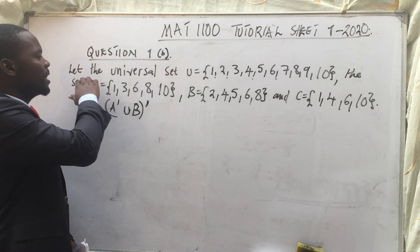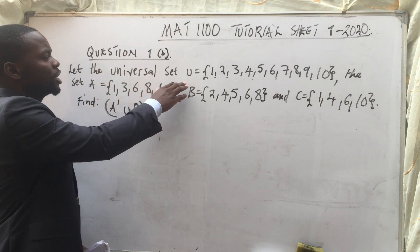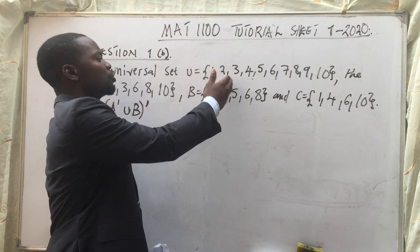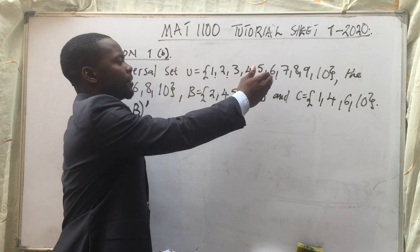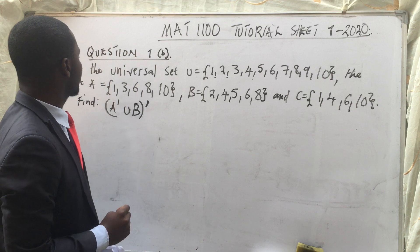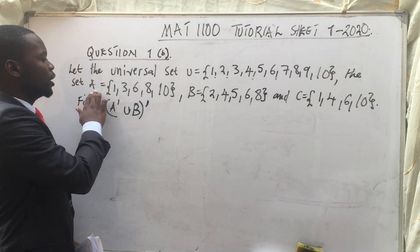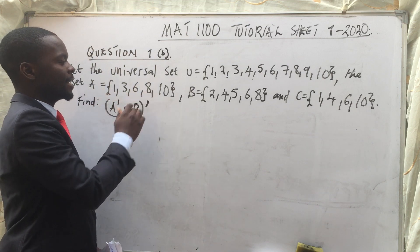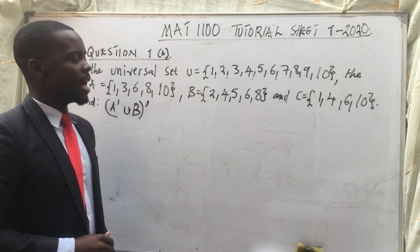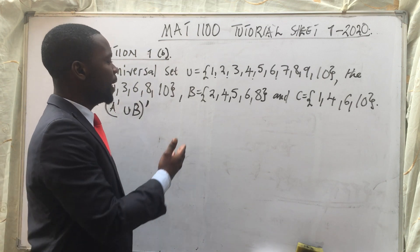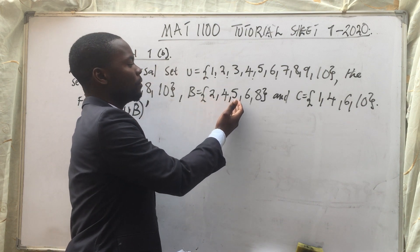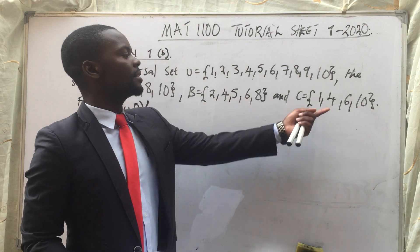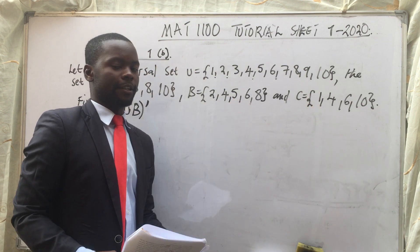The question reads: let the universal set U = {1, 2, 3, 4, 5, 6, up to 10}. The set A = {1, 3, 6, 8, 10}, and then B = {2, 4, 5, 6, 8}. That is our set C.